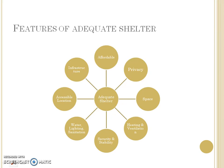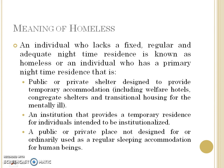An individual who lacks a fixed, regular, and adequate nighttime residence is known as homeless. There are three categories of people considered homeless. The first category includes those who stay in public or private shelters designed to provide temporary accommodation. These are not permanent in nature because adequate shelter must be fixed, regular, and adequate.